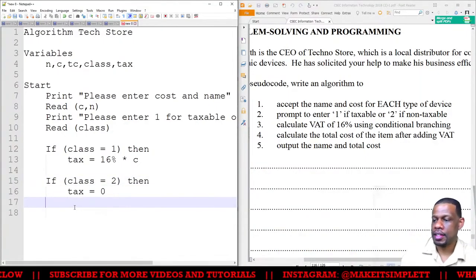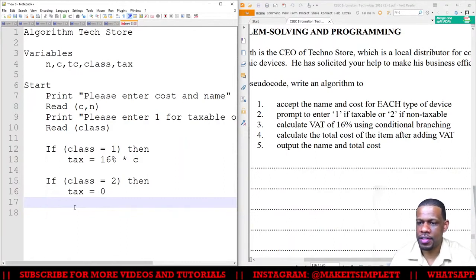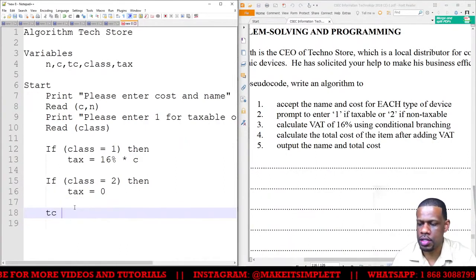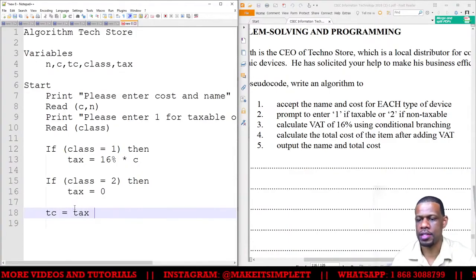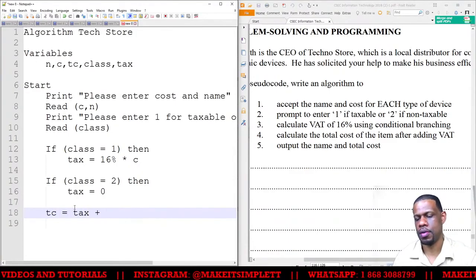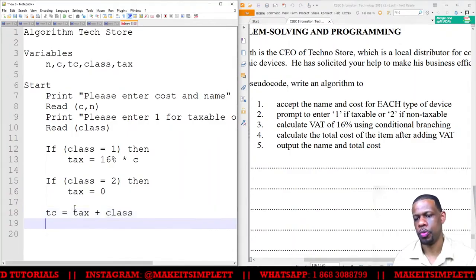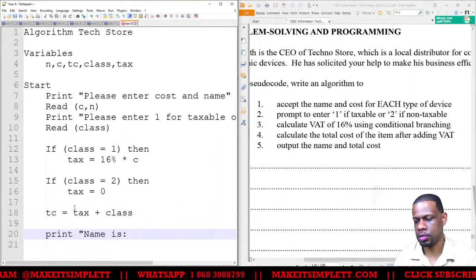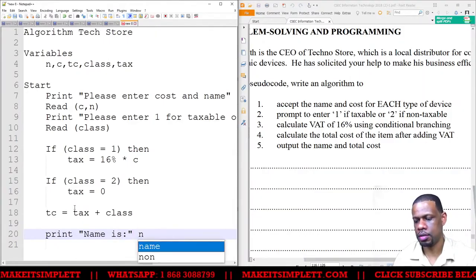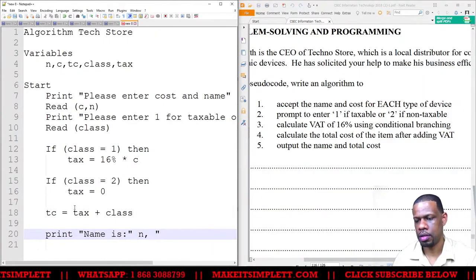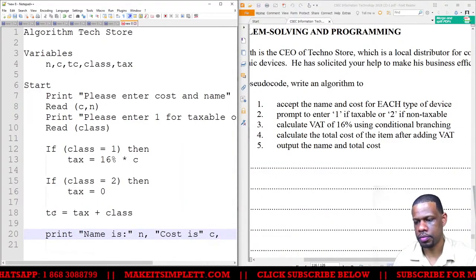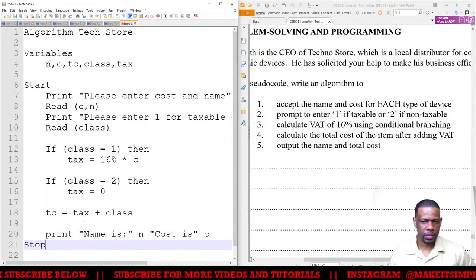And then after that, I want to calculate the total cost of the item after VAT. So we'll now say tc for total cost. tc is equal to tax plus cost. Print 'Name is' colon, name is n, comma, 'cost is' c. And then stop. That's literally it.